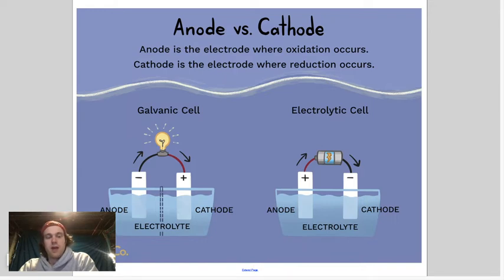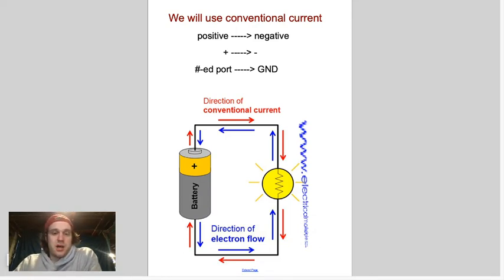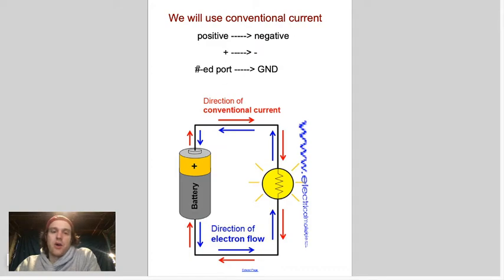Conventional current is what we're going to use in class. When people formalized electricity, they talked about things going from positive to negative — electricity flowing positive to negative — when in actuality electrons flow from negative to positive. But we're going to use positive to negative for all intents and purposes of this class.